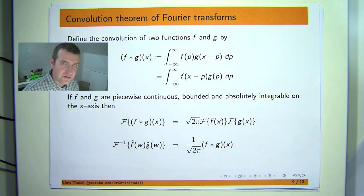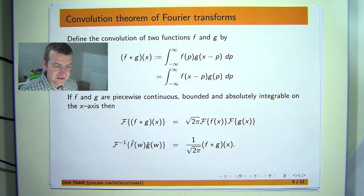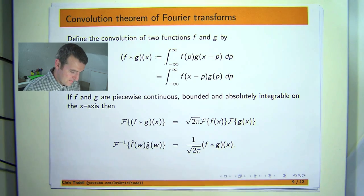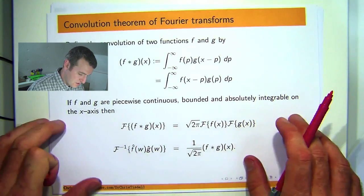So this sort of star, it's not multiplication. It's like a modified sort of version of multiplication. So this is the actual identities from the convolution theorem.